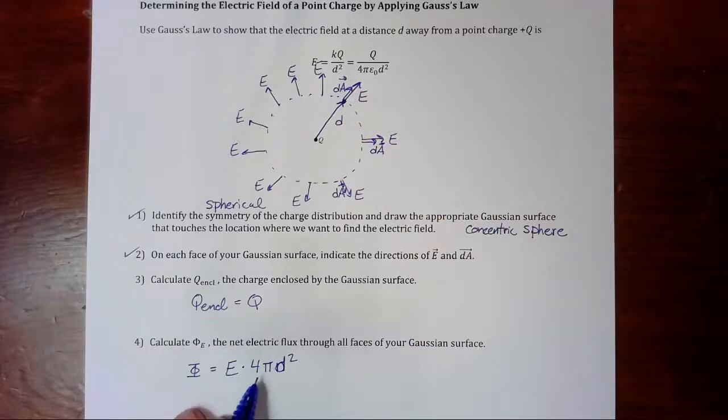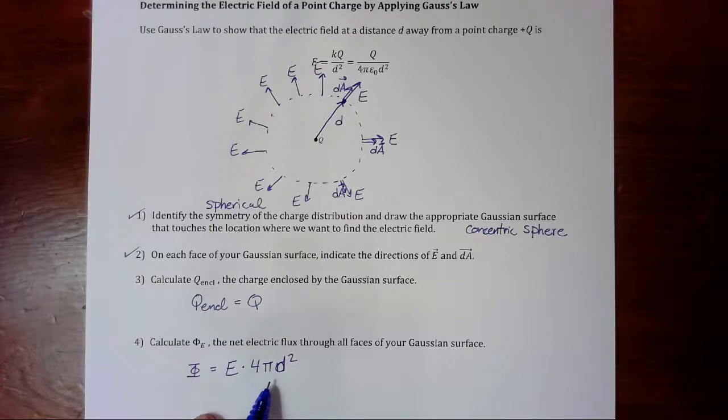So 4π d squared. And if you forget the area for the surface area of a sphere, and you get it confused with the volume of a sphere, on your AP reference tables, it has all those area and volume equations, so you shouldn't have to mix those up.